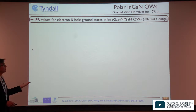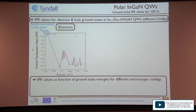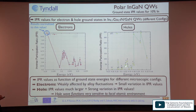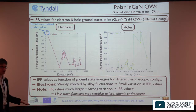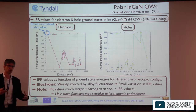Looking at how IPR values change with ground state energy for a 10% InGaN/GaN C-plane system: electron IPR values show some fluctuations but are not dramatically large. In contrast, the hole IPR values show massive localization effects already at 10% indium — some configurations are very strongly localized. This is consistent with the strong sensitivity of the hole energy to local configuration, confirming that the hole wave function is very sensitive to the local environment.